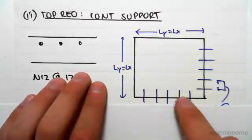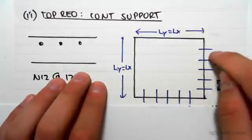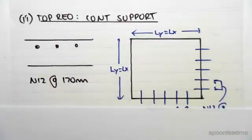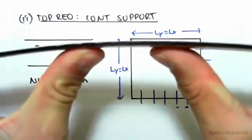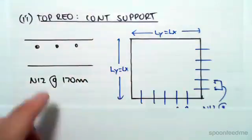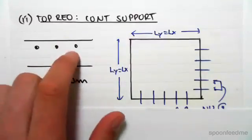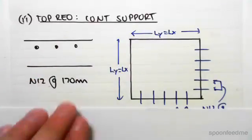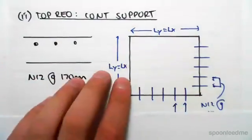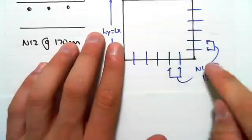This reinforcing is now in the top because at the support it's hogging, so our slab is going to bend like that, which means that the tension is now in the top of the slab, which means that the steel layers need to be towards the top of the slab. So because again this is a perfect square, 8 by 8 meters, the spacing of reinforcing is both at 170 millimeters.